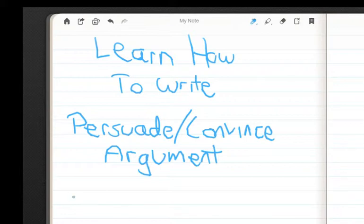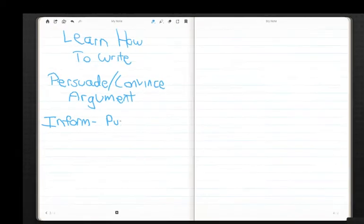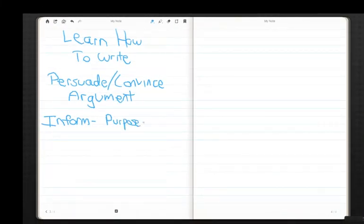Another way of writing is to inform through your writing. You're writing for a purpose - this is a purposeful piece where you're telling them a lot of facts or information about something specific.